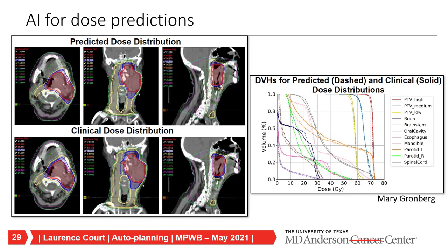The next step is to predict the 3D dose. Several groups are trying this. Data from Mary Gromberg in our group shows dose predictions for patients treated with IMRT or VMAT. The agreement between predicted and actual clinical plan dose distributions is quite remarkable—both the 2D distributions and DVHs show very good agreement. She's trained this using plans considered to be good plans. Next, we can apply it to other plans, and if there's poor agreement—if the manual plan shows higher doses than predicted—that flags a plan that could potentially be better.